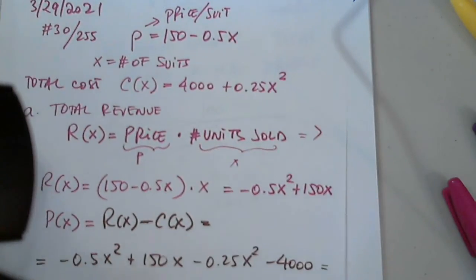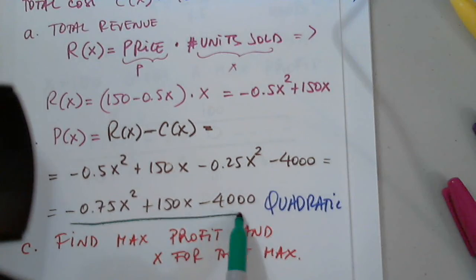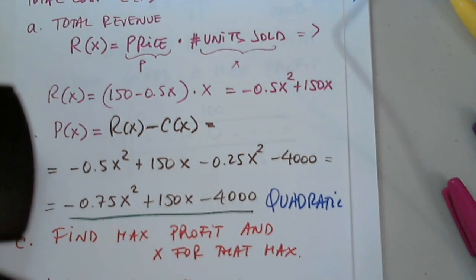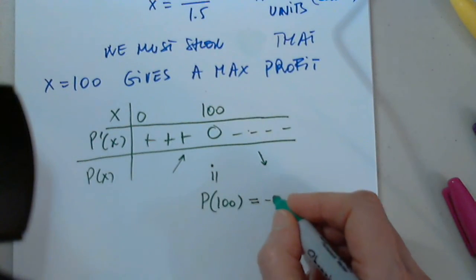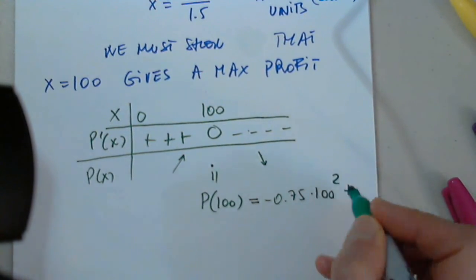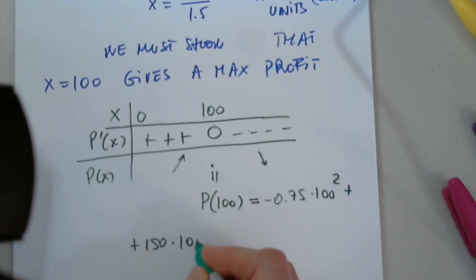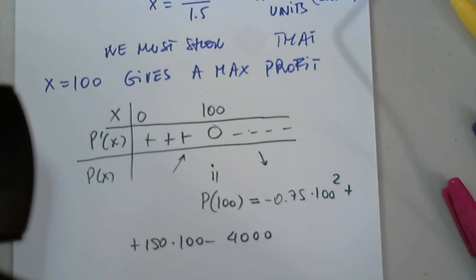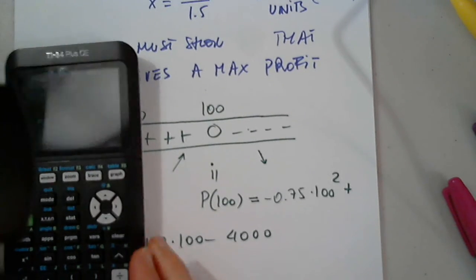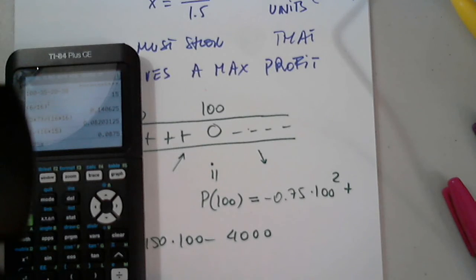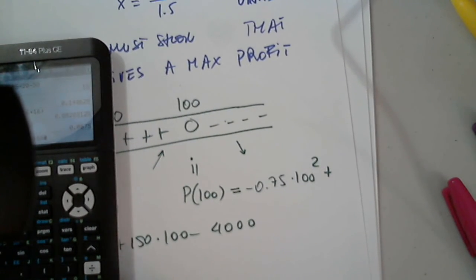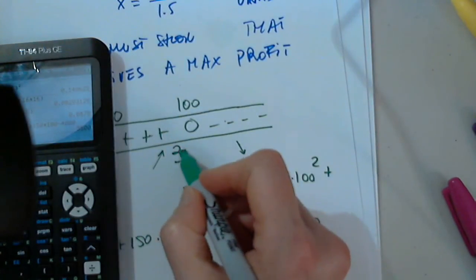And now, I'm asked to find the maximum. I go back to the function. Here is the profit. And I will plug in 100 to get the answer. So, this will be negative 0.75 times 100 squared plus 150 times 100 and minus 4000. So, negative 0.75, that's correct. Negative 0.75 times 100 squared and then plus 150 times 100 and minus 4000. So, negative 0.75, that's correct. 100, 150. Yes, minus 100. That's it. So, the answer is 3,500. So, 3,500.